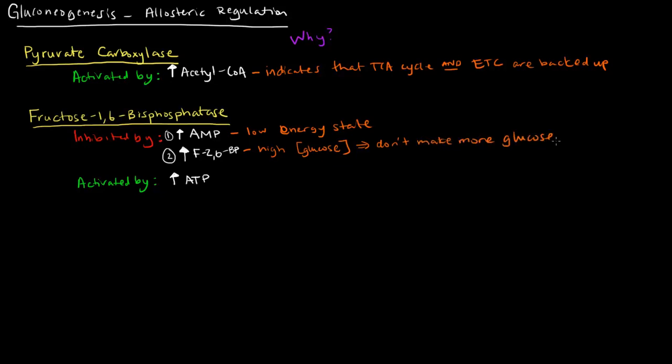And if you recall, fructose-2,6-bisphosphate is an activator of PFK1 in glycolysis. So here, it inhibits gluconeogenesis and activates glycolysis, which makes sense, because you don't want both processes to be active at the same time. Why would you want to break down glucose and make glucose in the same cell at the same time? That just doesn't make sense. It seems counterproductive.